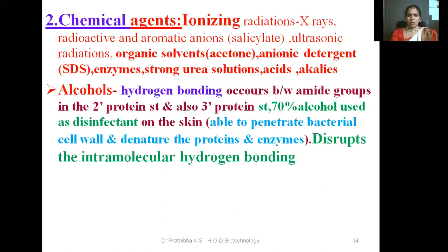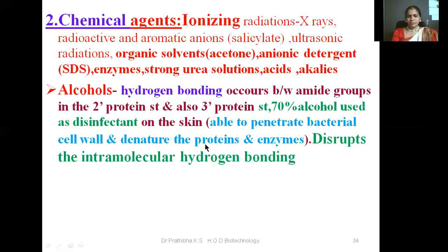Let us take alcohol as an example. Alcohol breaks the hydrogen bonding which occurs between amide groups in the secondary protein structure and also in the tertiary protein structure. 70% alcohol used as a disinfectant on the skin is able to penetrate the bacterial cell wall and denature the proteins and enzymes. Once the cell wall is broken or denatured, the cell will not be able to survive. Alcohol disrupts intramolecular hydrogen bonding, bringing about breakage in the secondary and tertiary structure of the protein.